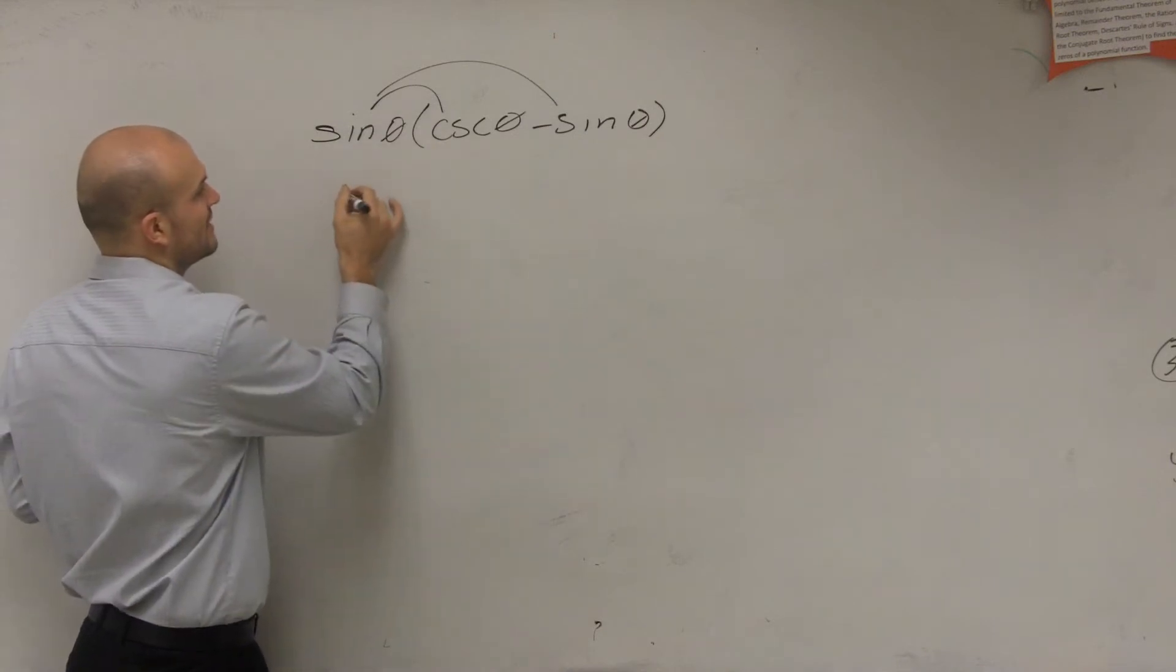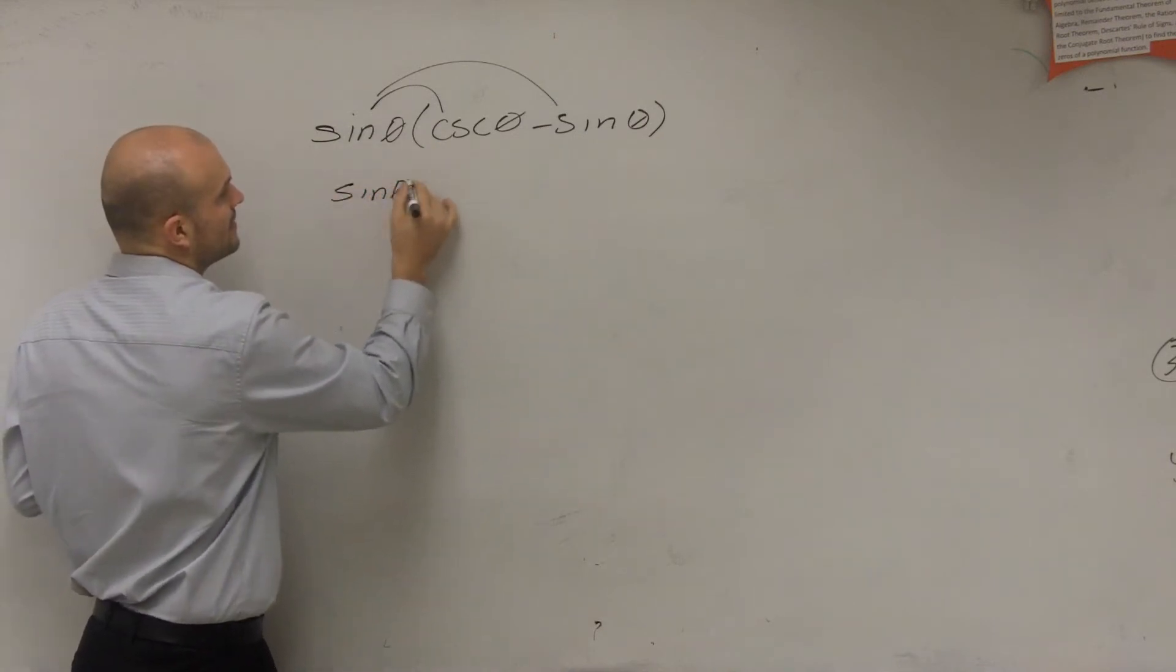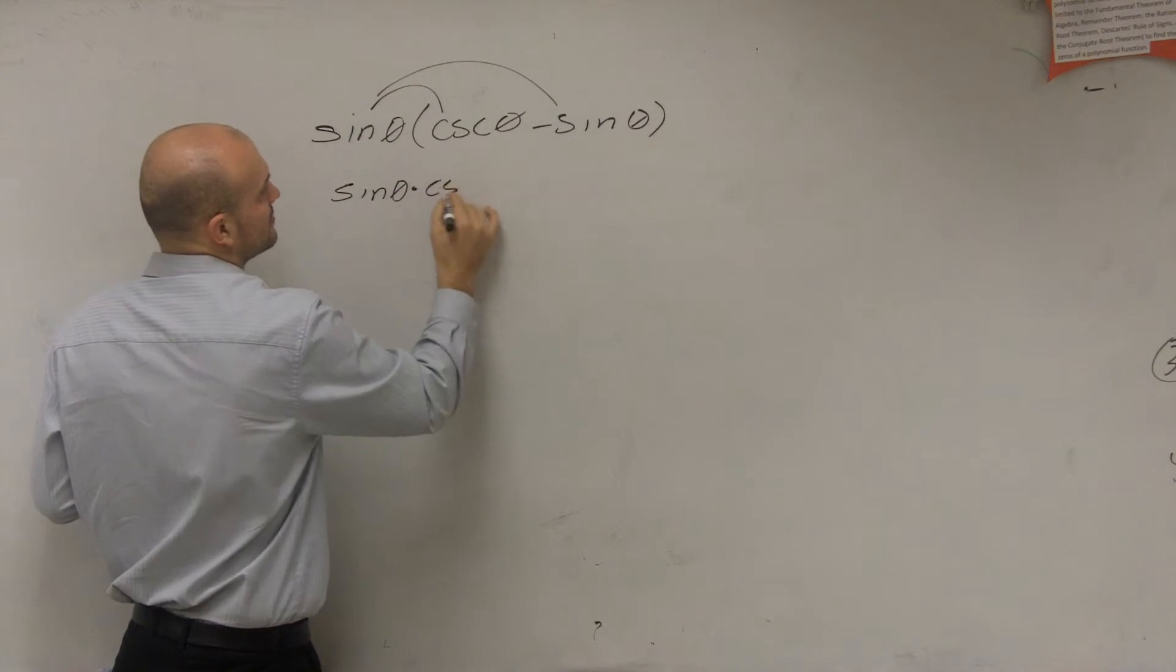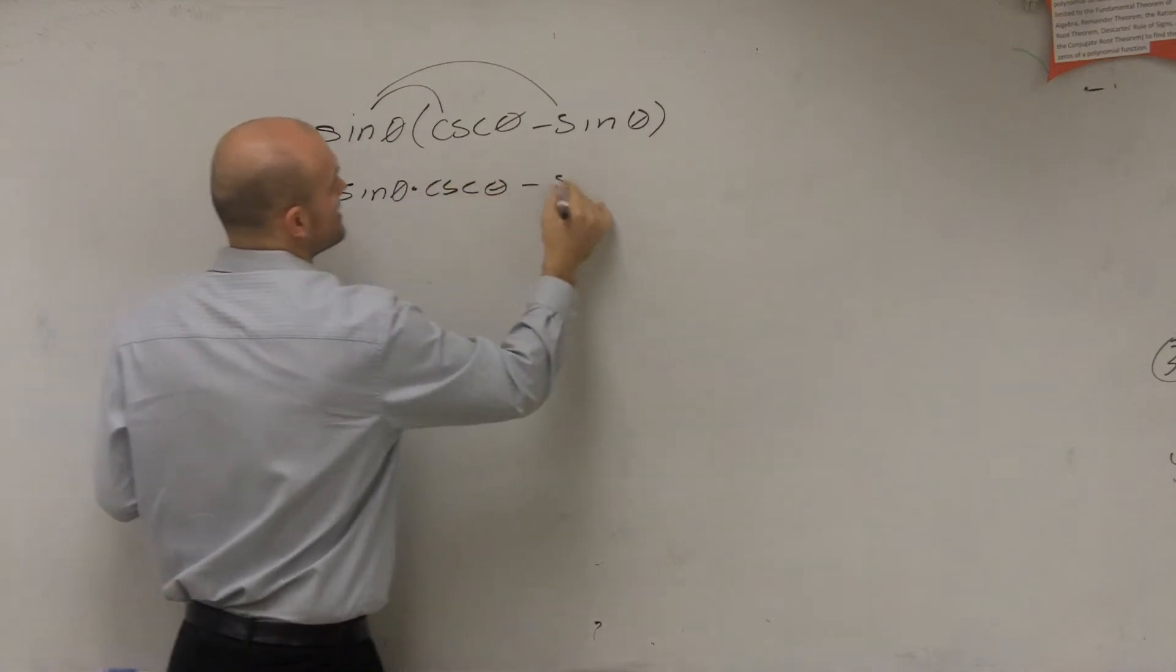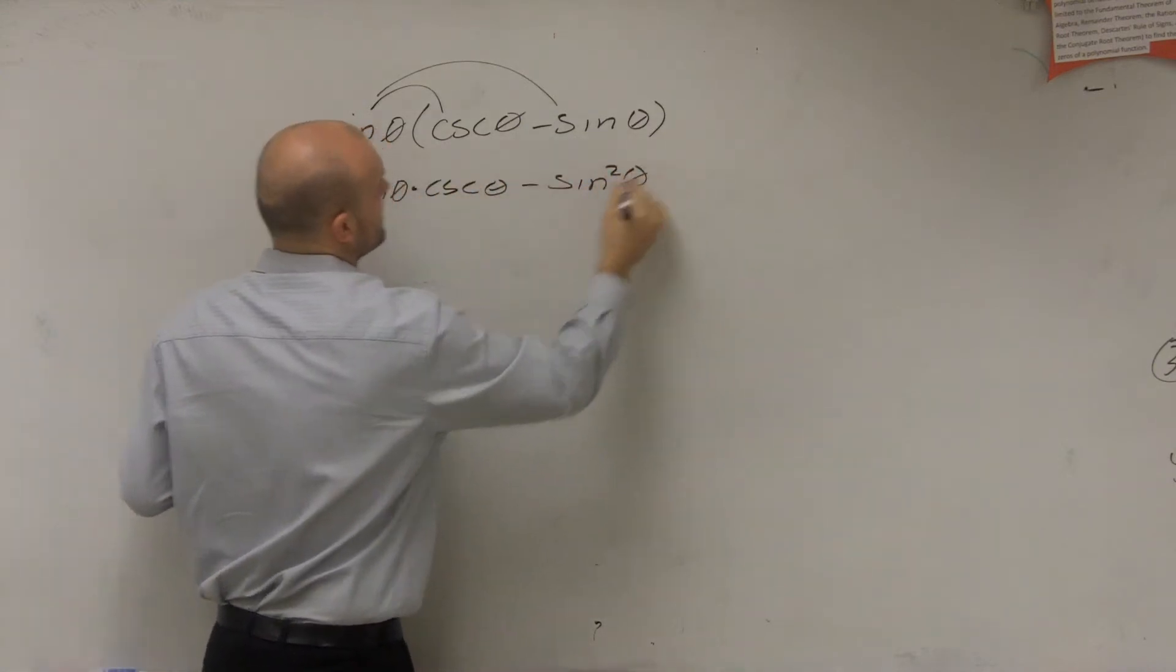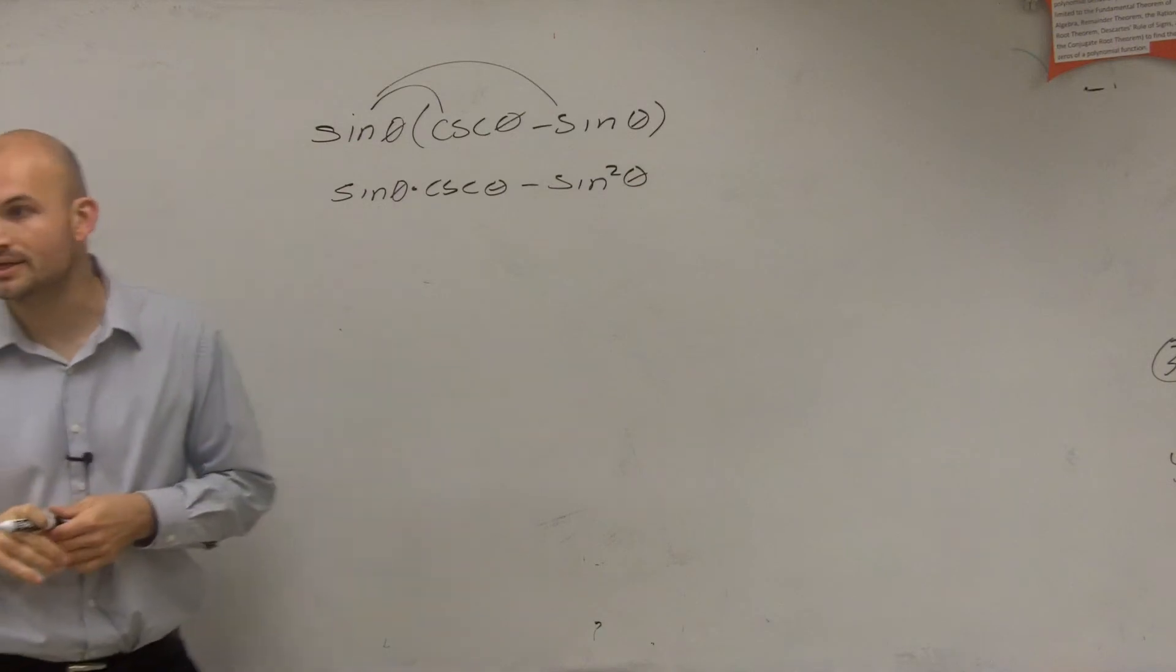So sine of theta times cosecant of theta is sine of theta times cosecant of theta minus sine squared of theta. Sine times sine would be sine squared.